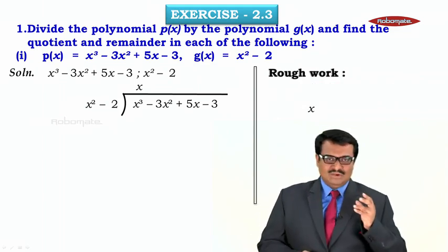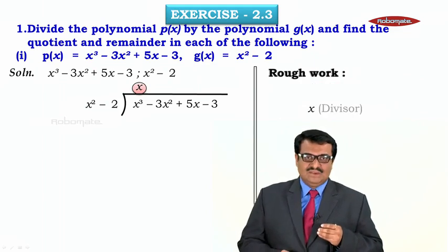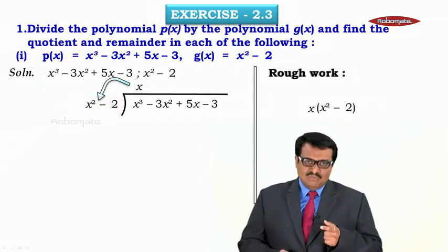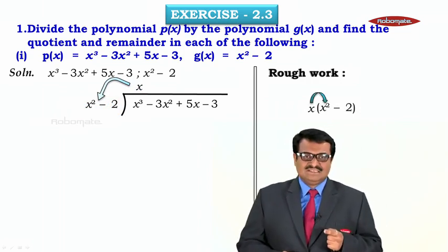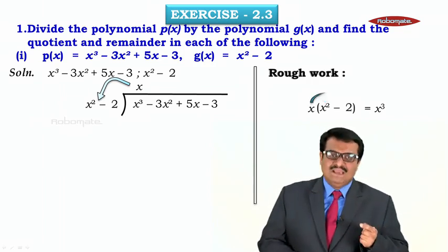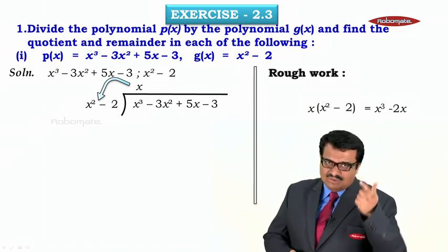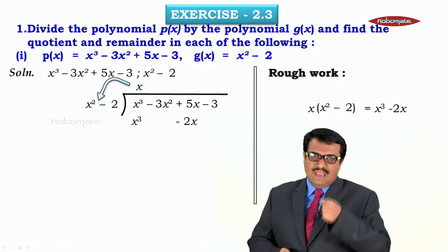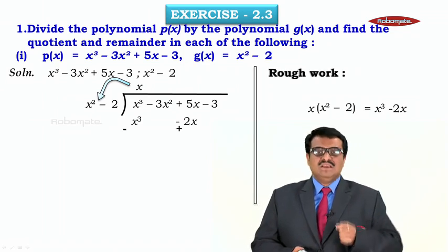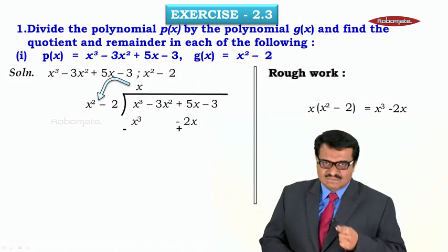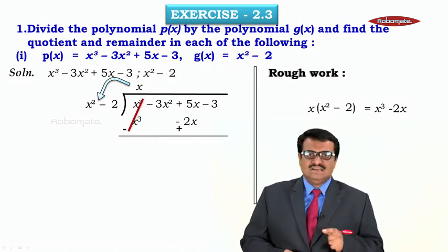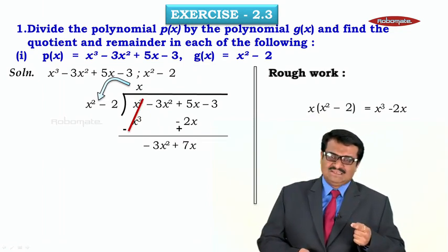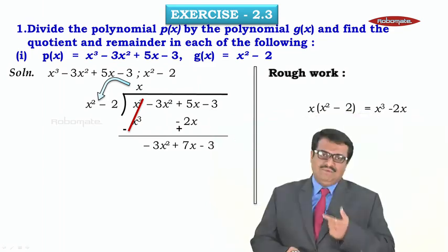This x becomes the first term of the quotient. Now x is multiplied with the entire divisor x² − 2. Opening the brackets: x × x² = x³ and x × (−2) = −2x. We write this result below the dividend — x³ below x³ and −2x below the x term. On subtraction, signs change: plus becomes minus and minus becomes plus. x³ and −x³ cancel; −3x² comes down as is; 5x + 2x becomes 7x; and −3 is carried down.